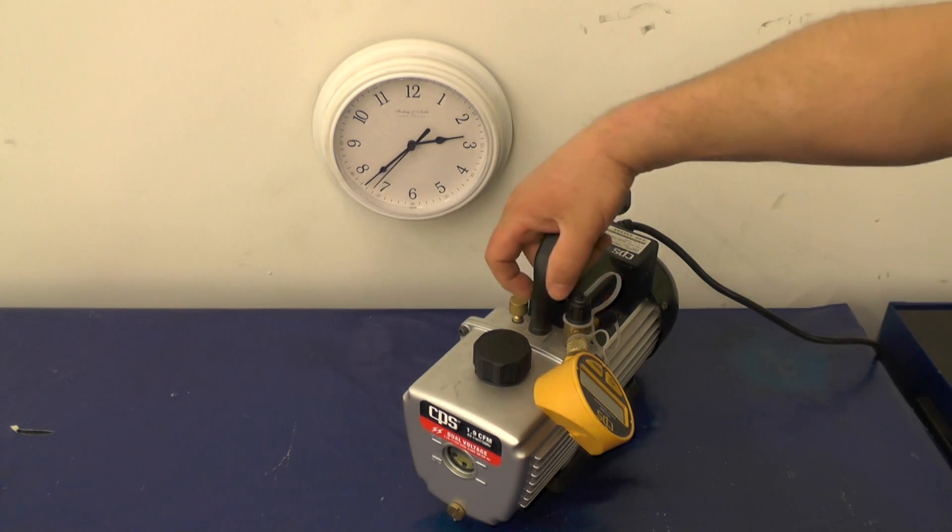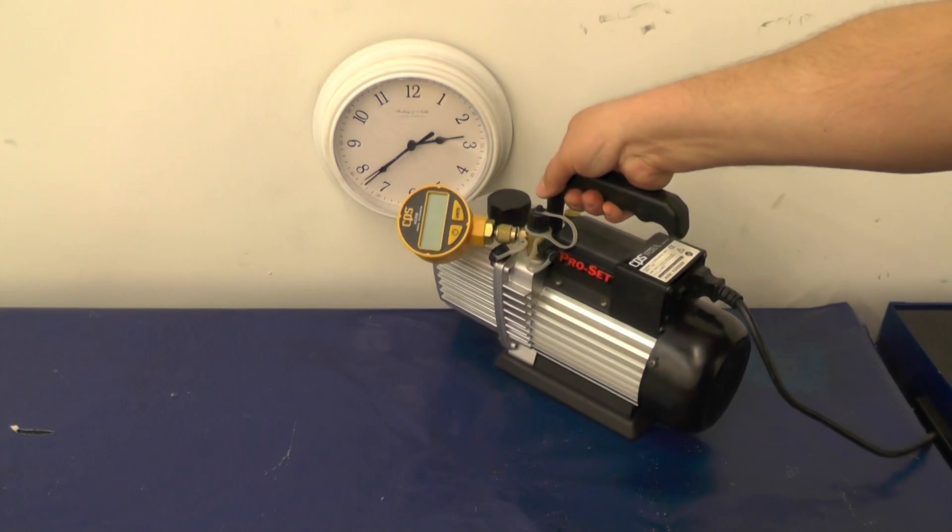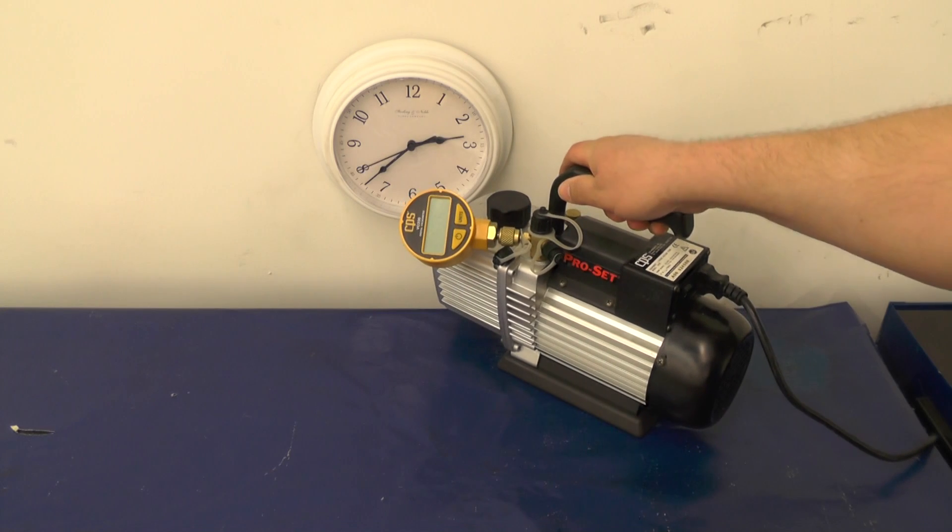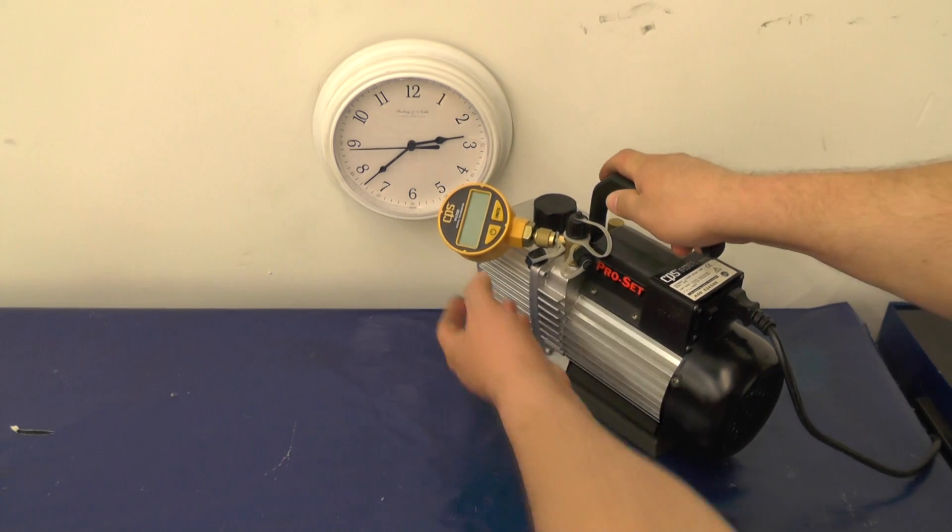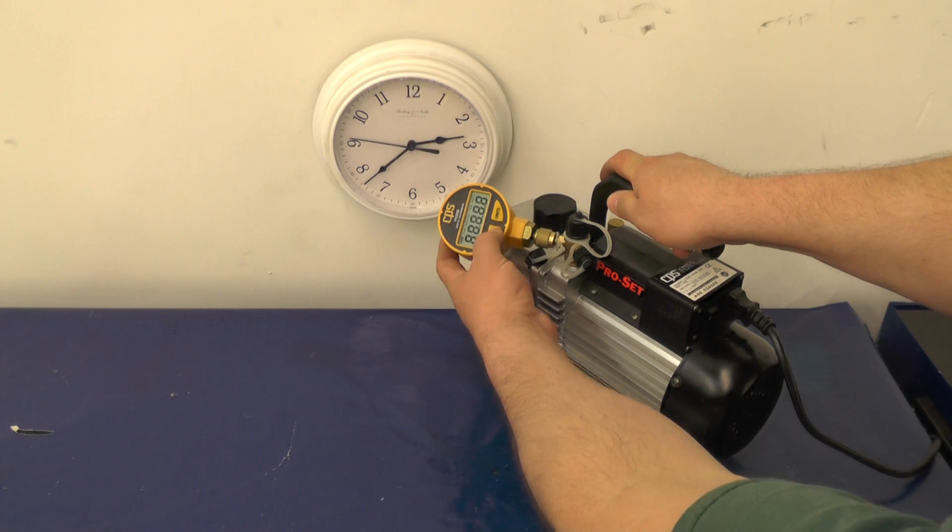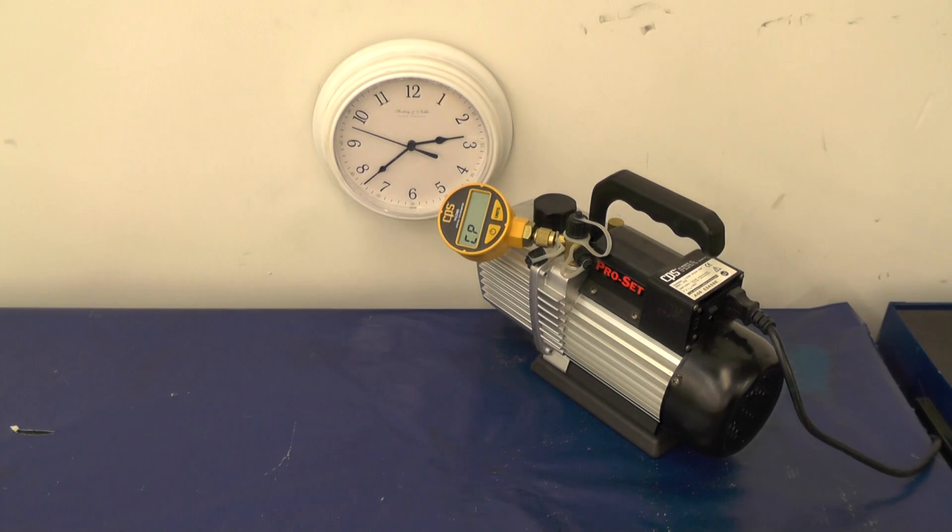What I've done is I've gone ahead and hooked up a CPS vacrometer, otherwise known as a micron gauge, and what I'm going to do is turn it on here and then we're going to run the pump.